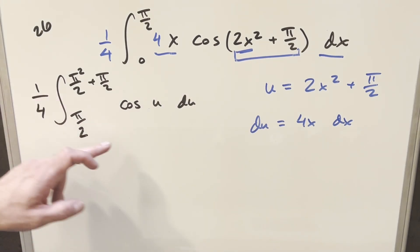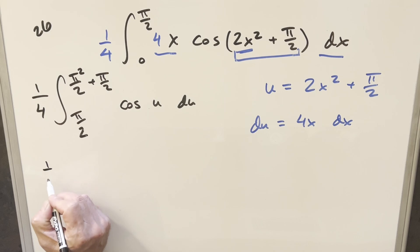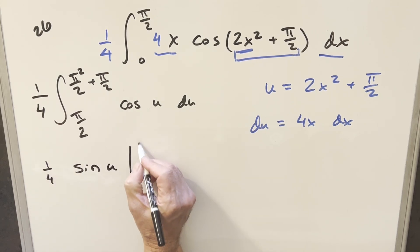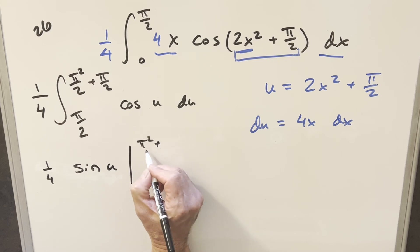So at this point, we have kind of complicated bounds, but we've got a very easy integral to do. Integrating cosine of u, that's just going to be sine of u, and we just need to evaluate this with these complicated bounds.